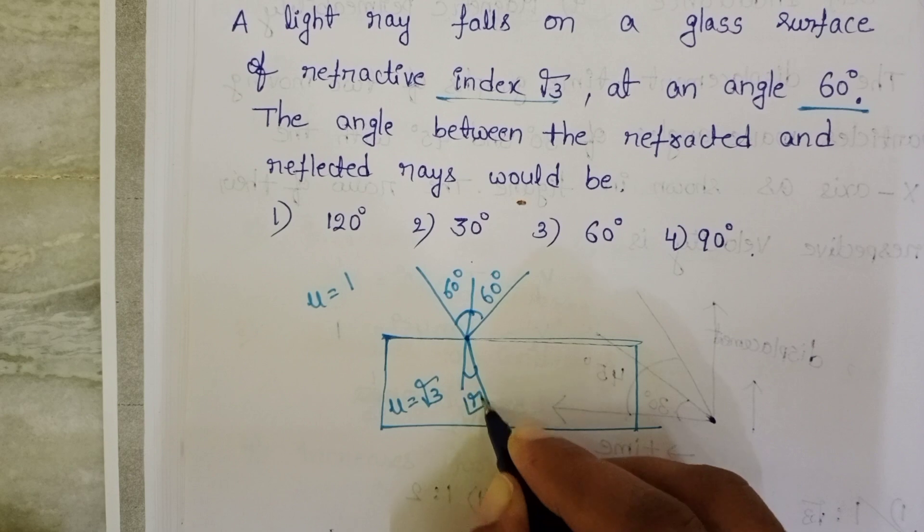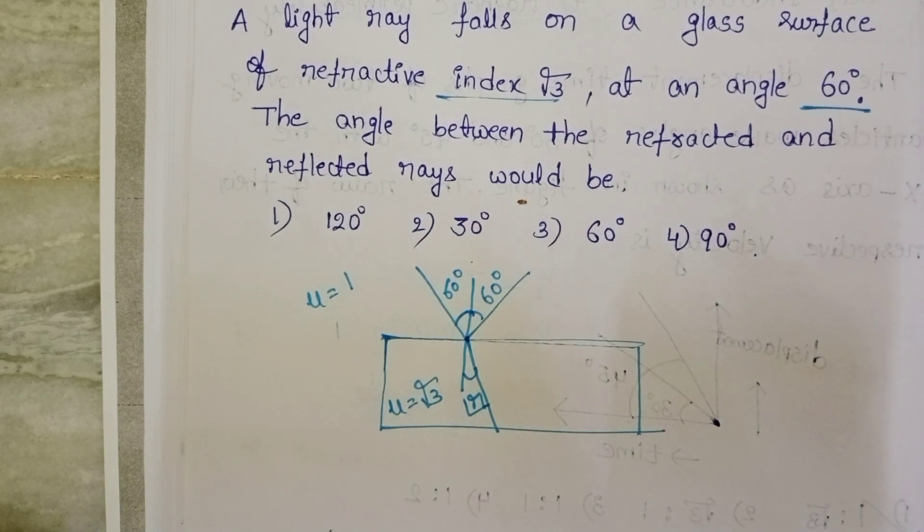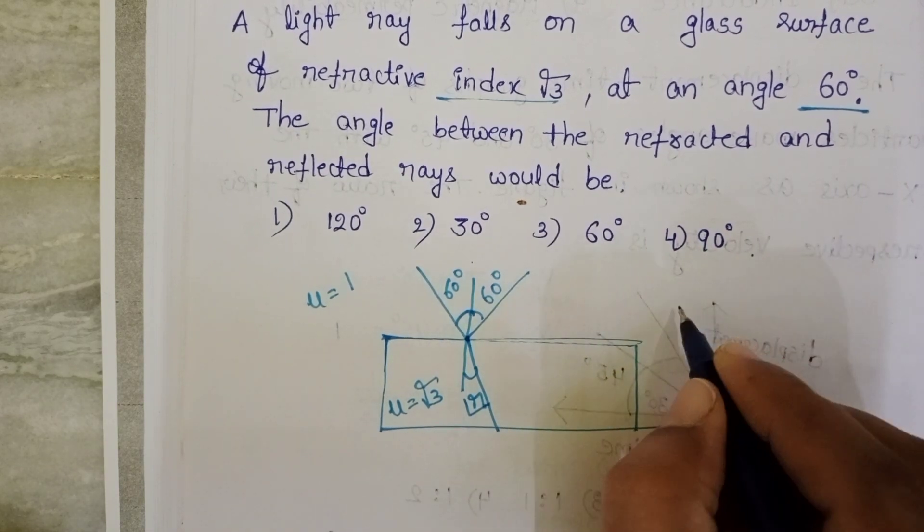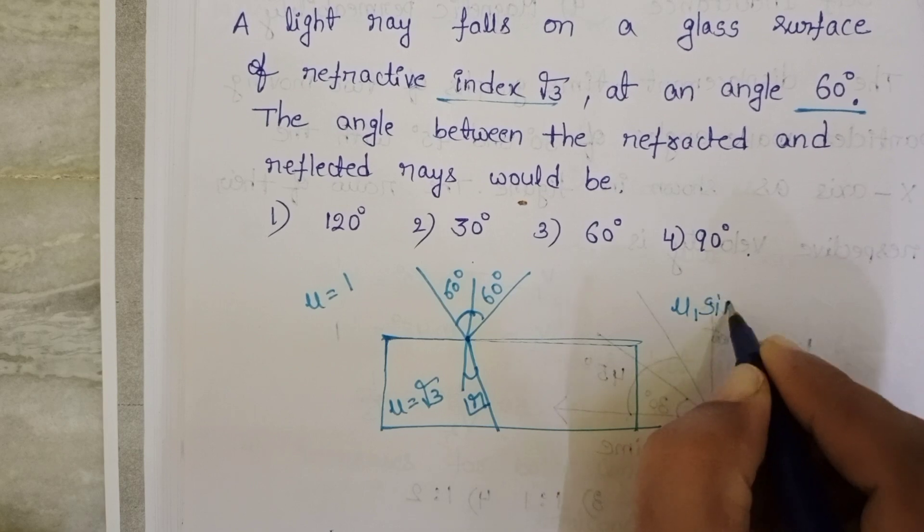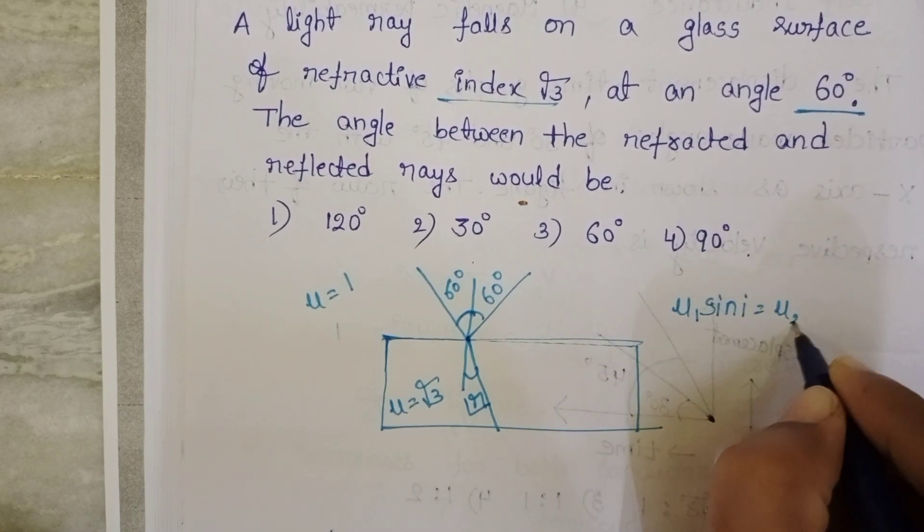Here we don't know angle of refraction, so by using Snell's law first to find out angle of refraction: mu 1 sin i equals mu 2 sin r.